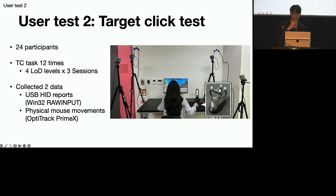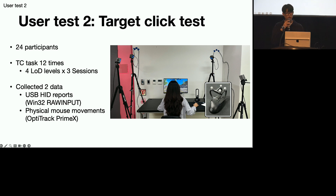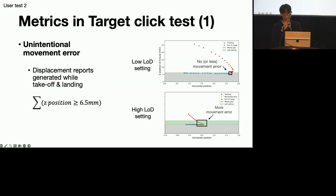For the user test, we recruited 24 participants who play FPS games for at least four hours a week. Participants completed the target click task 12 times — four LOD levels times three sessions per LOD level. During the task, we collected raw USB HID reports from the mouse and physical mouse movement using a motion capture system.